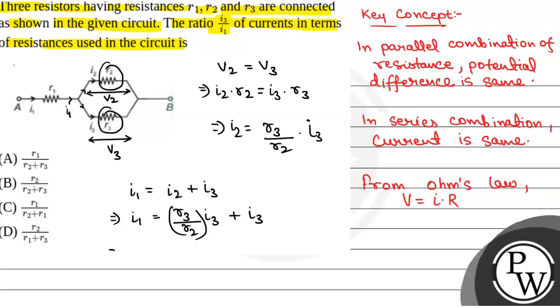So I2 is R3 by R2 into I3. So we will have I1 equal to I3 common R3 by R2 plus 1.